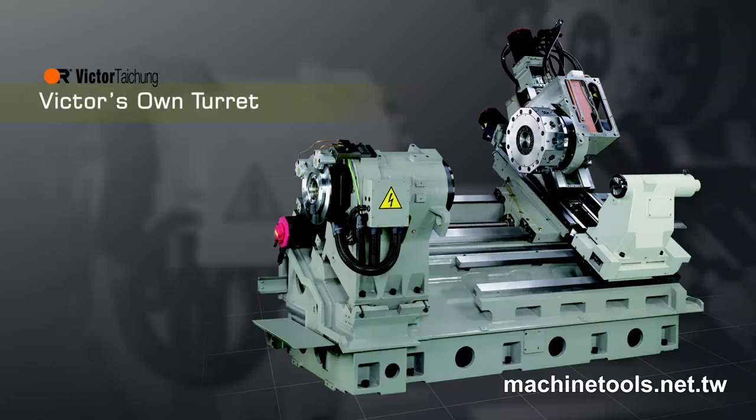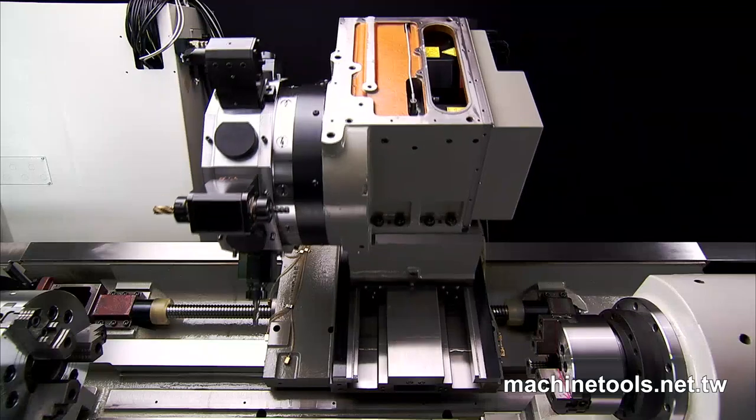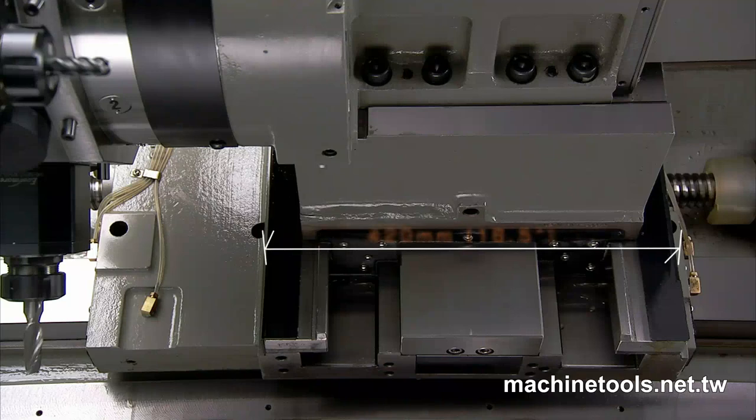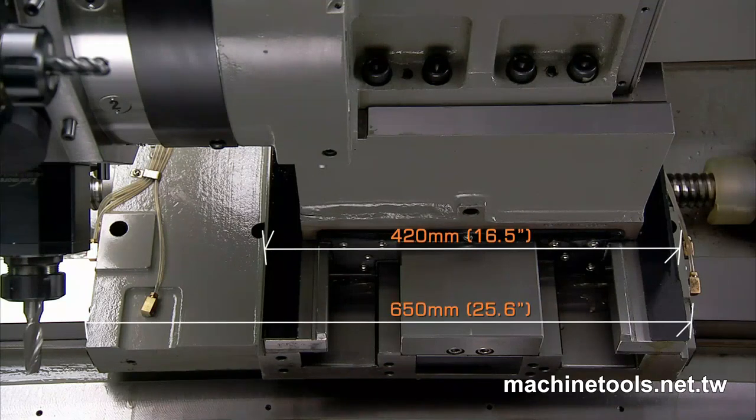Victor's own turret. V-12 servo turret. Wide carriage 650mm in length supports the heavy turret steadily for reliable and continuous turning.